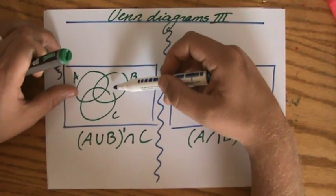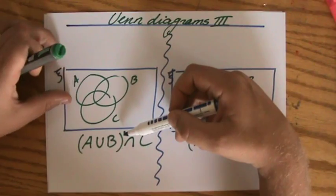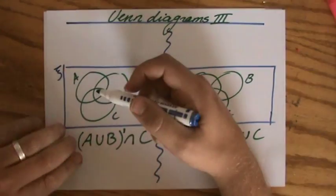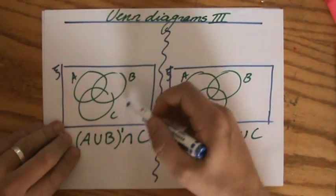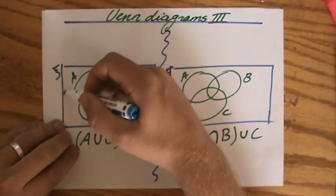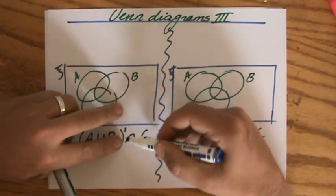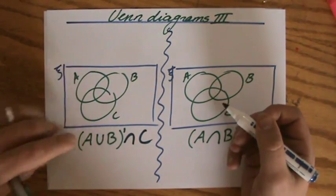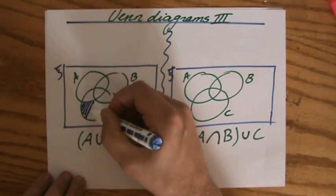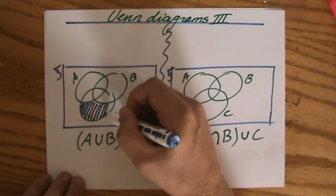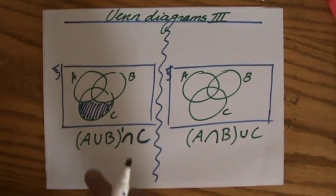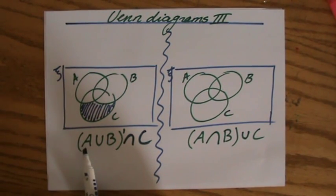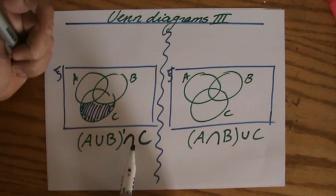However, it continues then. It says you had a complement of that. So that actually means everything outside of the union of A and B. So now I am everywhere outside the union of A and B. But I'm continuing, because it also has to intersect with C. So what should I be shading? That is this part, because all the elements in that shaded part are outside of the union of A and B, but intersect with C.